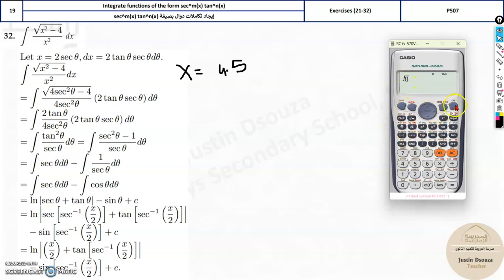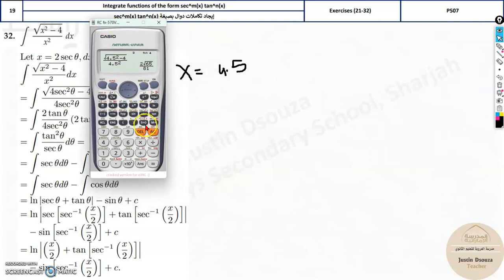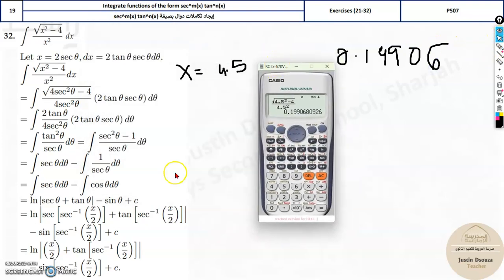Now, square root. Let me just do the fraction. Square root of 4.5 squared minus 4 divided by 4.5 squared. What is the answer? It's 2 root. Let's write the decimal form. So the answer is 0.19906. This is enough.